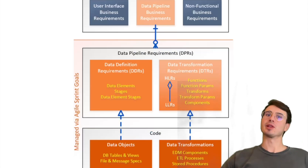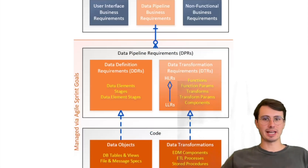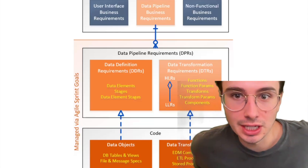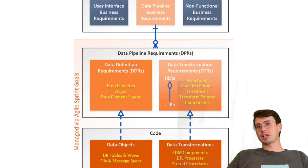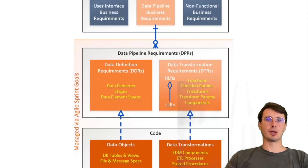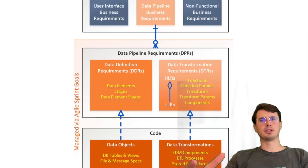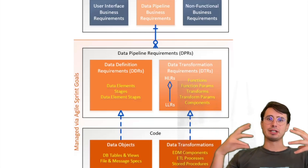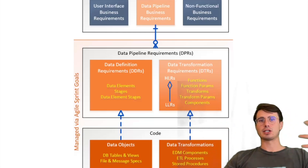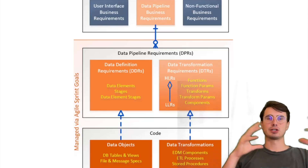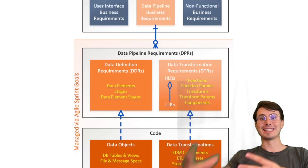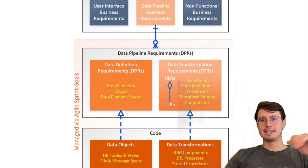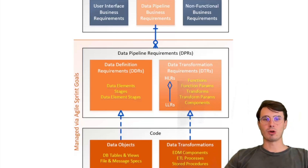Before you even start designing your data pipeline, the most important thing you can do to lay a solid foundation is to really understand the requirements and objectives of your pipeline. This includes identifying all the different data sources you want to pull from, their formats, how often those data sources change over time, as well as the data destinations — whether it's the data warehouse, data lake, analytics tool — and your transformation needs: the aggregating, cleaning steps, to get the end result you want out of this data.